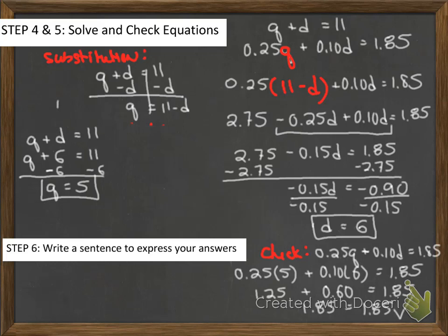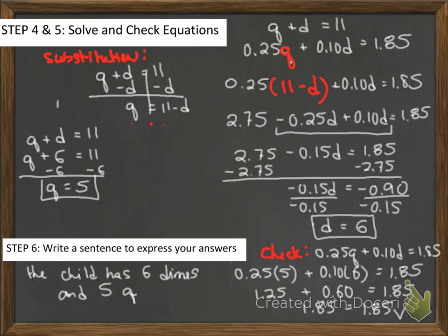Now let's write a sentence. The child has six dimes and five quarters.